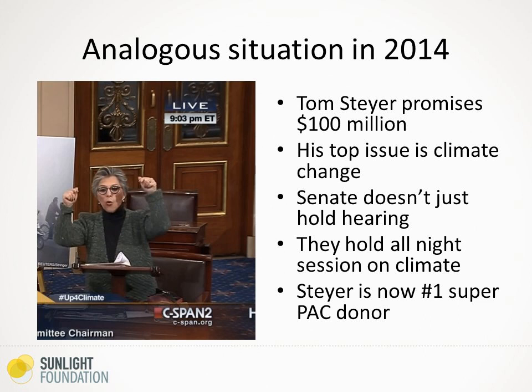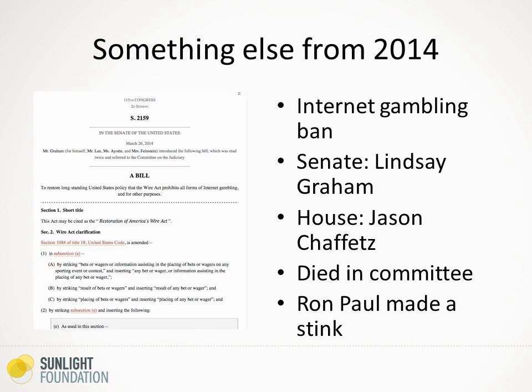The Senate held an all-night session on climate change — I've got a picture of Barbara Boxer at 9:03 p.m., and it was like 16 hours on C-SPAN. They just talked and talked about climate change, basically trying to persuade Tom Steyer that he should support Senate Democrats. I thought this was a fascinating thing to do, and it really shows the difference between how traditional interests like Goldman Sachs and Boeing operate versus what happens when you have somebody who can spend $100 million on an election.